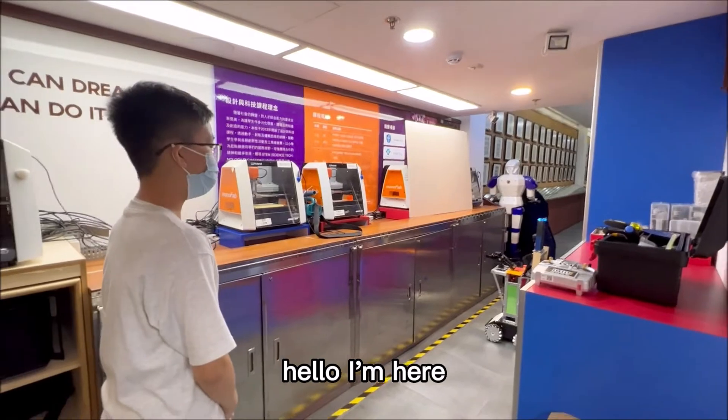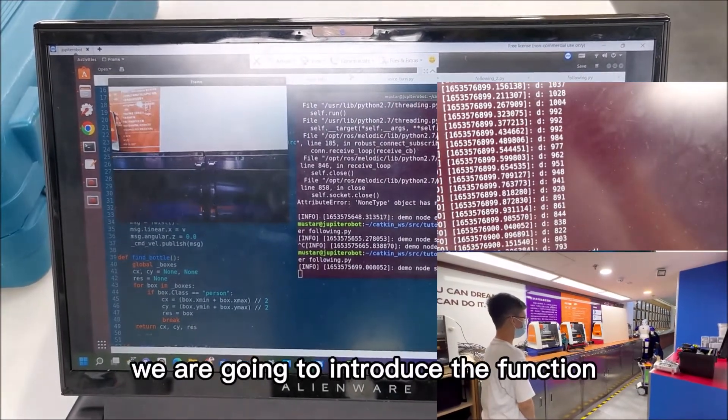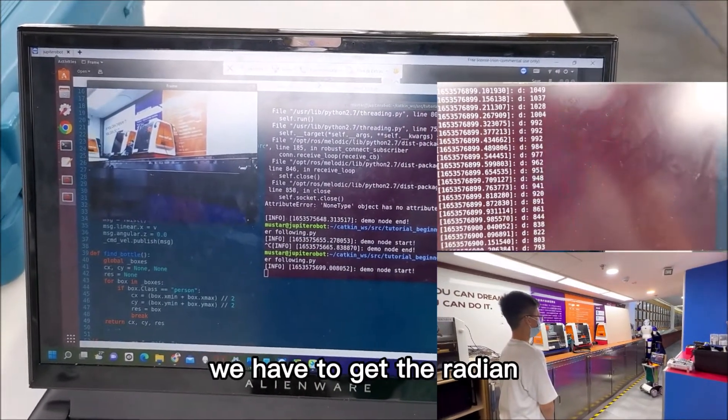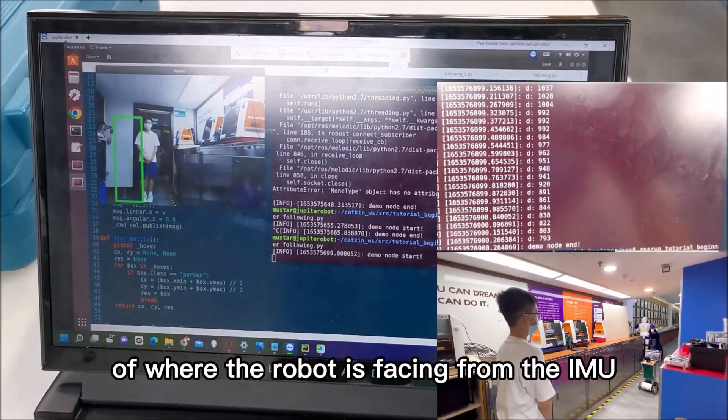Hello, I'm here. In the following speech, we are going to introduce the function of facing at the operator. First of all, we have to get the radian of where the robot is facing from the IMU.